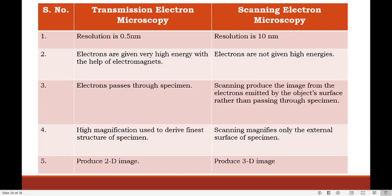First, in transmission electron microscope, resolution is about 0.5 nanometer, while in scanning electron microscope, resolution is approximately 10 nanometers. Secondly, in TEM, electrons are given very high energy with the help of electromagnets, while in SEM, electrons are not given high energies. In TEM, electrons pass through the specimen, while in SEM, the image is produced from electrons emitted by the object's surface. In TEM, high magnification is used to derive the fine structure of the specimen, while SEM magnifies only the external surface. Lastly, TEM produces a two-dimensional image while SEM produces a three-dimensional image.